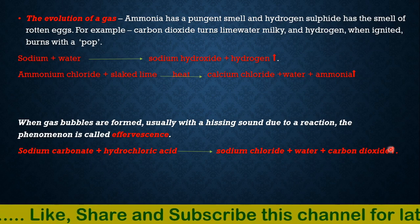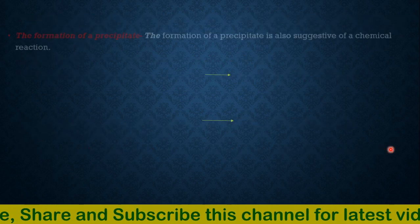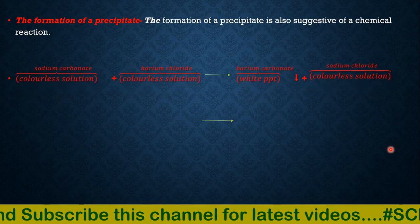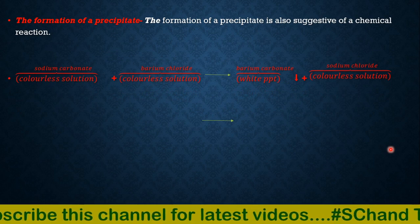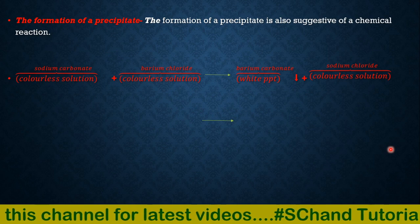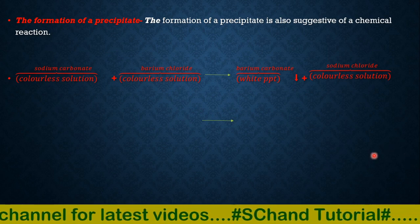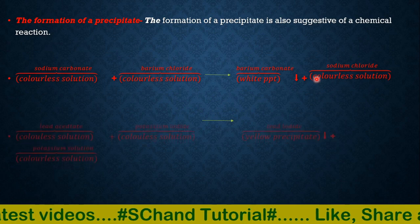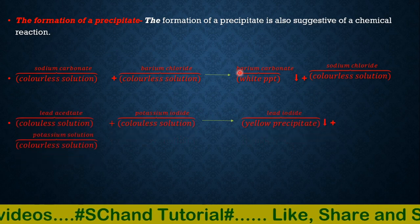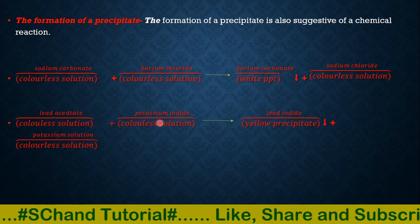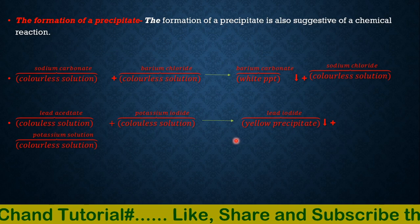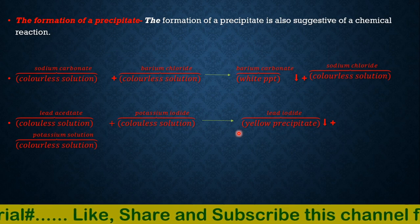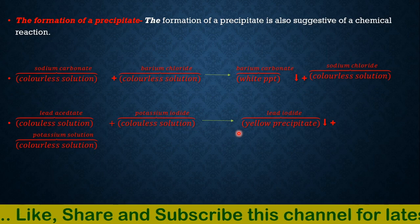The next characteristic is formation of a precipitate. Formation of a precipitate also indicates a chemical reaction. For example, sodium carbonate solution, which is colorless, when added to barium chloride solution, also colorless, forms barium carbonate as a white precipitate and sodium chloride as a colorless solution. Another example: lead acetate, a colorless solution, when mixed with potassium iodide solution gives lead iodide as a yellow precipitate and potassium acetate as a colorless solution.